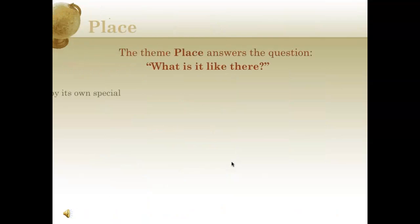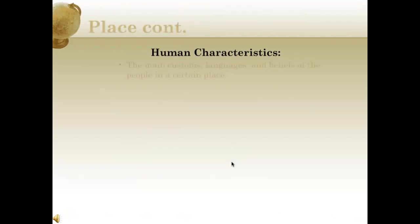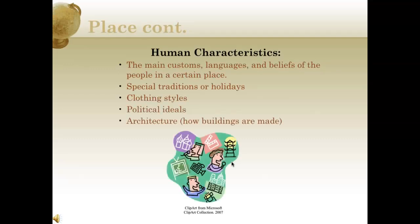Now let's move on to place. The theme of place answers the question: what is it like there? A place is often known by its own special characteristics — special traits or qualities that a place can have. Types of characteristics for place could be human or physical. Human characteristics could include the main customs, languages, and beliefs of people in a certain place, special traditions or holidays, clothing styles, political ideals, and architecture like how buildings are made.